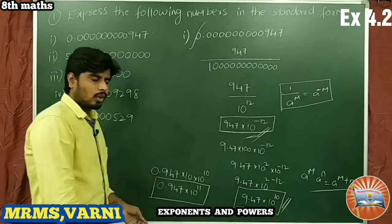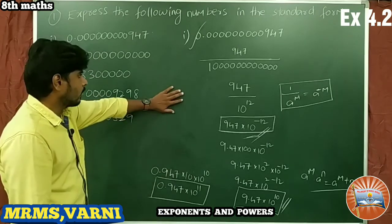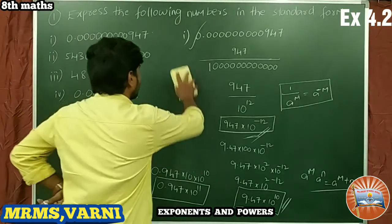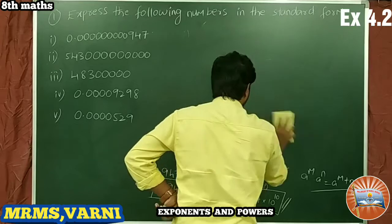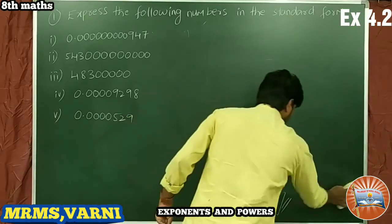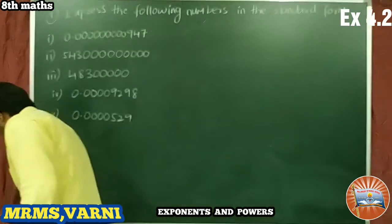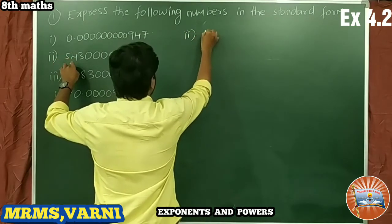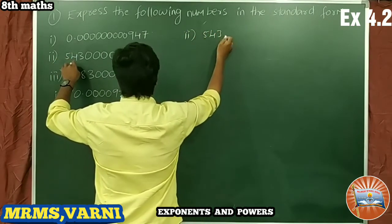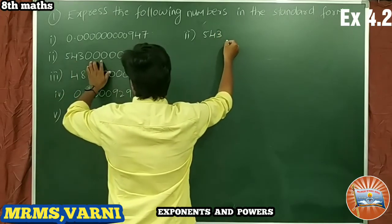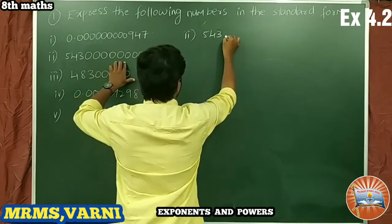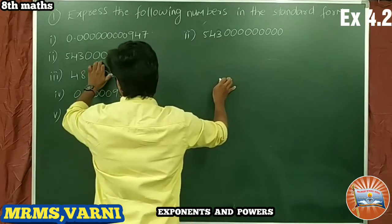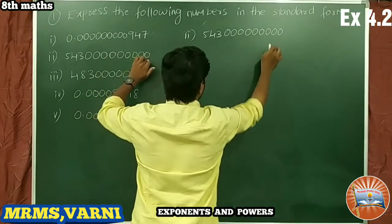This completes problem number 1. Next, problem number 2: the given number is 543 followed by 9 zeros — that is, 543,000,000,000. Let's count the zeros: 1, 2, 3, 4, 5, 6, 7, 8, 9 — yes, 9 zeros.